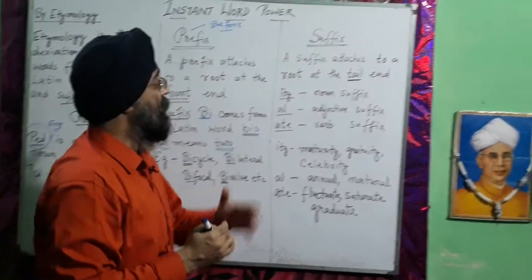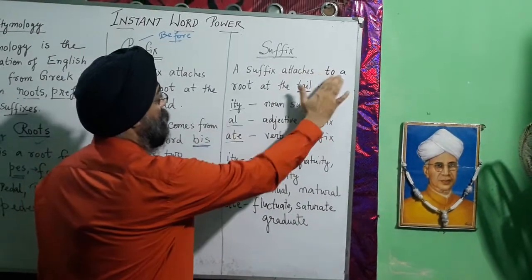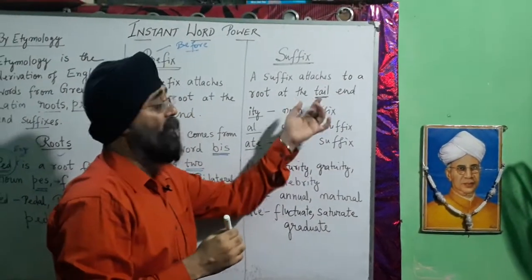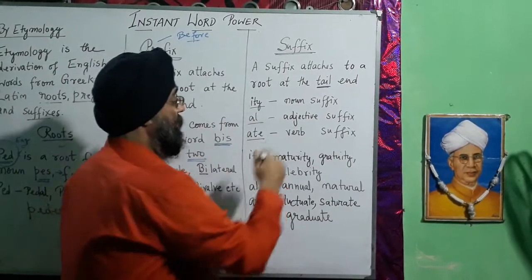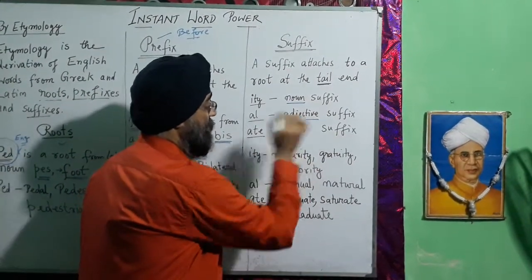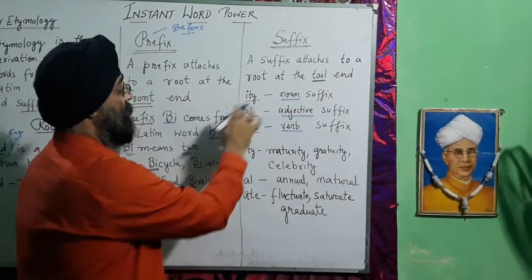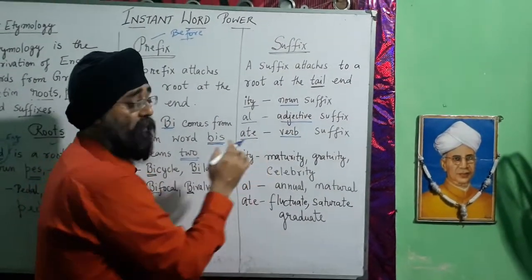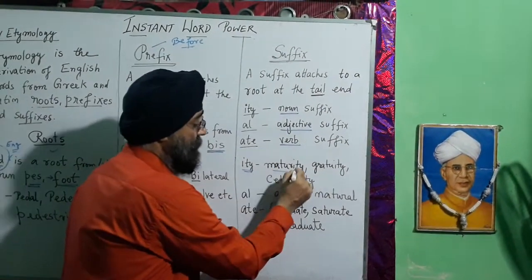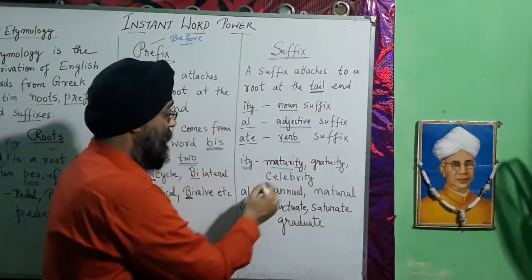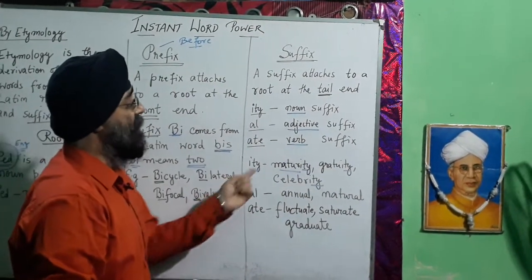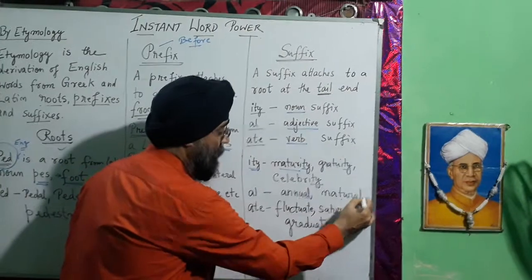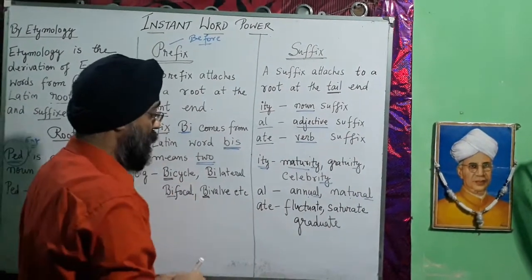Last, we have suffix. A suffix attaches to a root at the tail end — that is, the end part of a word. There are many types of suffixes: noun suffix, adjective suffix, and verb suffix. For example, the suffix '-ity' attaches to a root word, giving us words like maturity, gratuity, and celebrity — these are all noun suffix words. Similarly, the suffix '-al' gives us words like annual and natural.